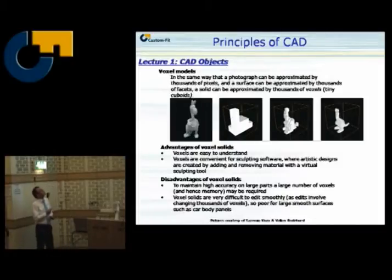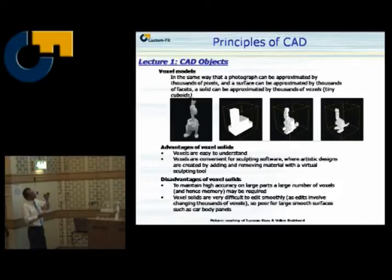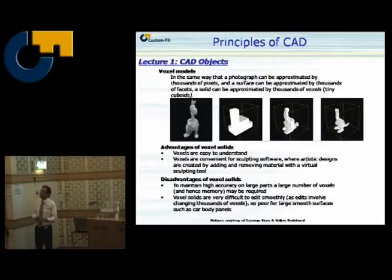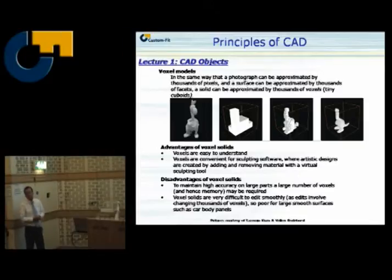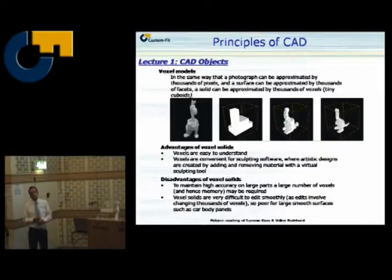The next step is voxel models. We all know what a pixel is in a camera — a voxel is a 3D representation of a pixel. So when you have a shape, you can represent it with all kinds of Lego blocks, and when you make them smaller and smaller, you have a voxel model of your product. The advantage is that it's very easy to understand, but to get high accuracy you need a lot of those little cubes, which takes a lot of memory, and smoothing is quite difficult. Later on, when we talk about the graded design of products, we use voxel representations.